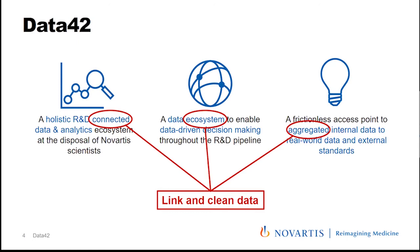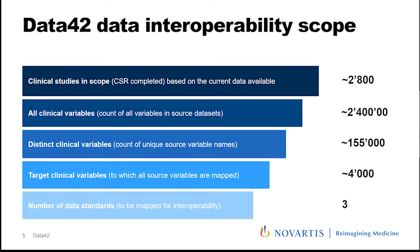Data cleaning is, in our case, a byproduct or advantage we get once the data is linked. The scope covers roughly just under three thousand completed clinical studies — CSR submitted, database locked. Across these studies we have a total of 2.4 million variables, 153,000 unique distinct variables, and a target model of around 4,000 variables integrating three different data standards: the legacy Novartis clinical data standard NovDDD, the current NCDS Novartis clinical data standard, and the GSK standard acquired three years ago when Novartis acquired the oncology GSK portfolio.